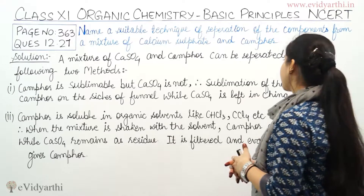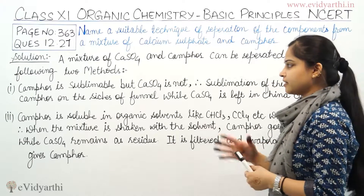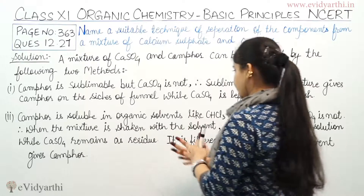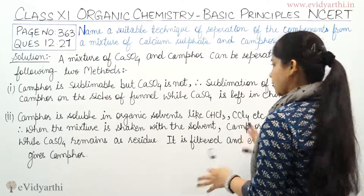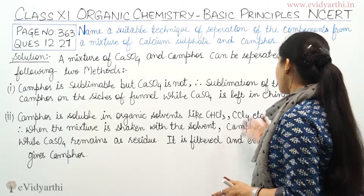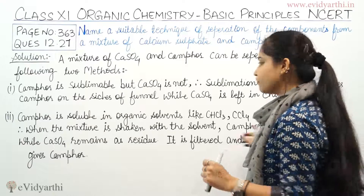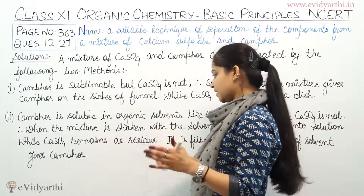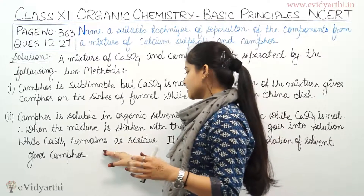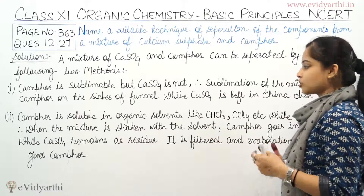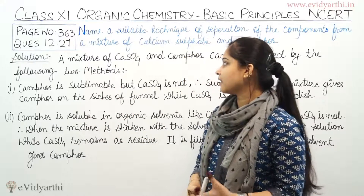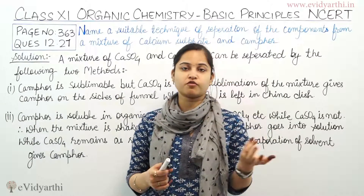A mixture of CaSO4 and camphor can be separated by the following two methods. First: camphor being sublimable but CaSO4 is not — sublimation of the mixture gives camphor on the sides of the funnel while CaSO4 is left in the china dish. Second method: camphor is soluble in organic solvents like chloroform and tetrachloromethane, while CaSO4 is not. When the mixture is shaken with the solvent, camphor goes into solution while CaSO4 remains as residue. It is then filtered and evaporation of the solvent gives us the camphor.